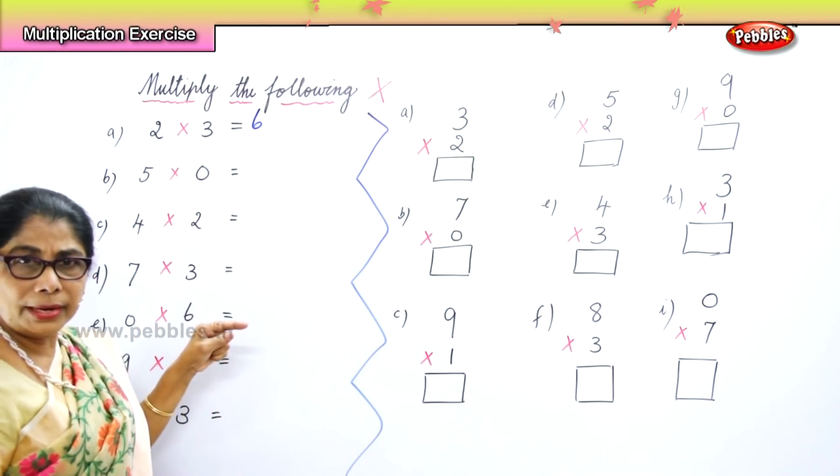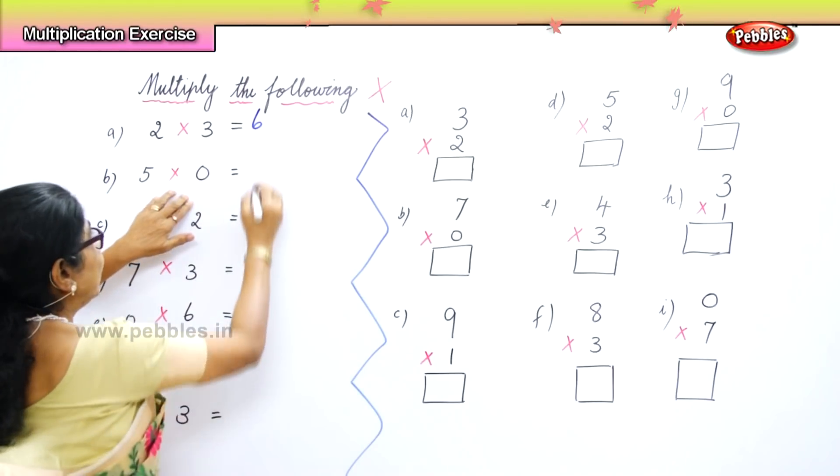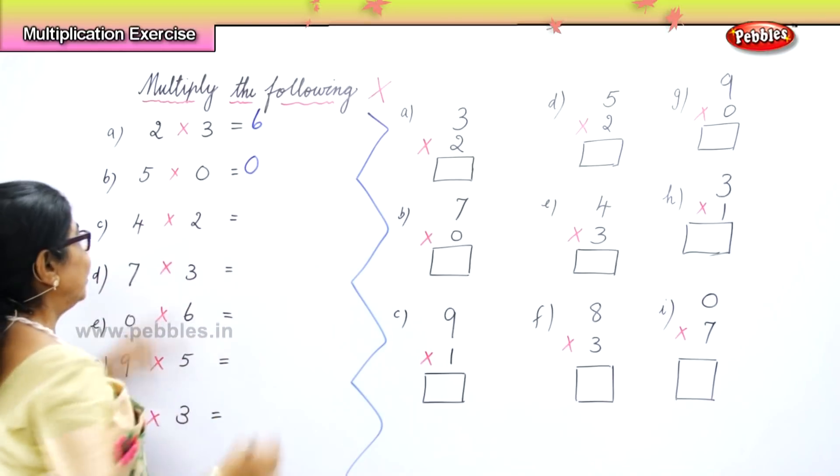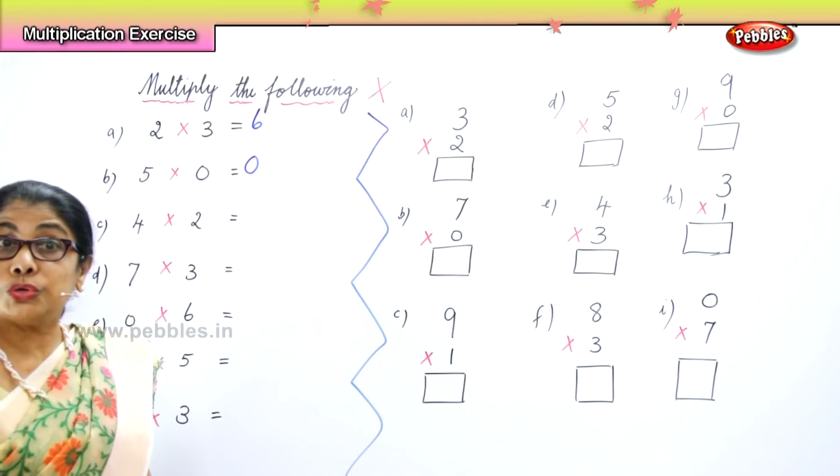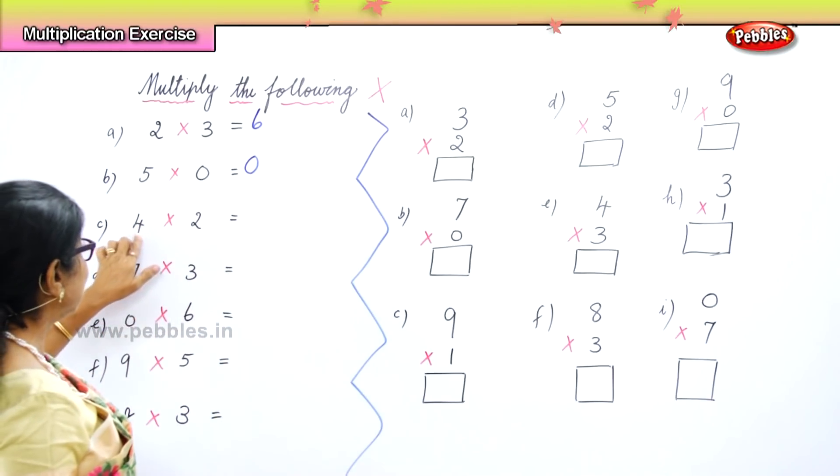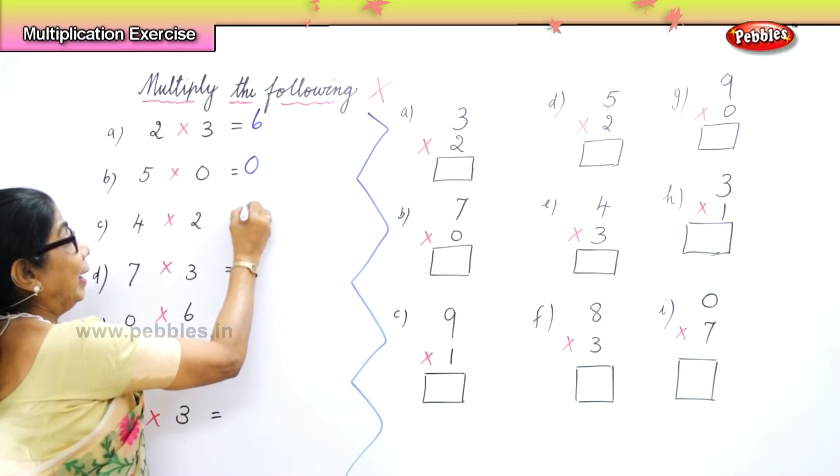Any number into zero is, five into zero is zero. Four two times, four twos are eight.